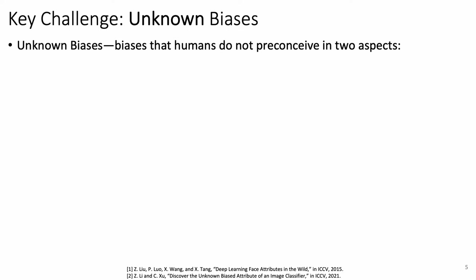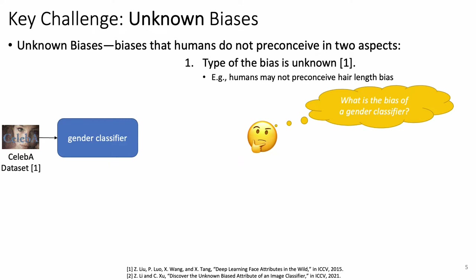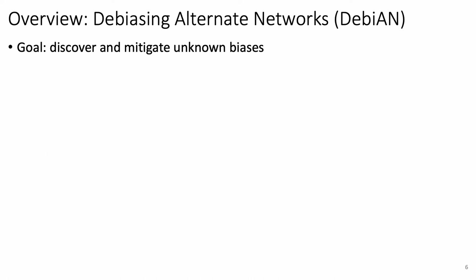In bias mitigation, the key challenge is the problem of unknown biases — that is, biases that are not preconceived by humans. They are unknown in two aspects. First, the type of bias is usually unknown; for example, humans may not preconceive the hair-length bias in a gender classifier. Second, the number of biases is also unknown; for example, a classifier may learn multiple biases from the training set.